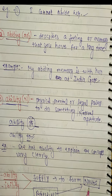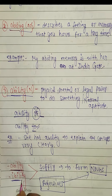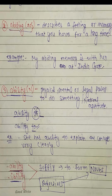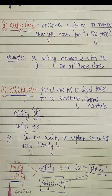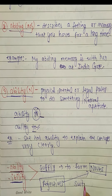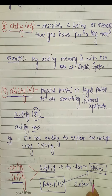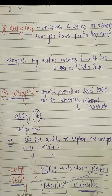We can also use '-ability' as a suffix to form nouns from adjectives — adding '-ability' at the end of a word to make it a noun. For example, 'suitability' is a noun word formed this way. Thank you so much for watching this video.